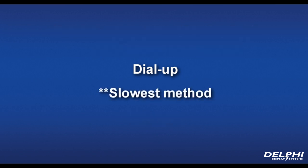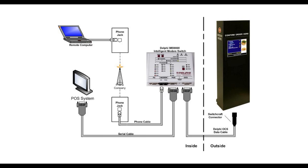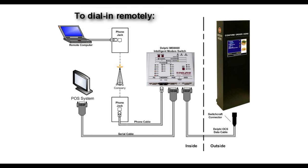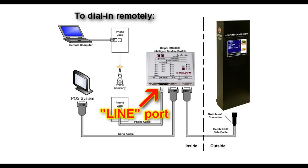Dial-up is the slowest method as all data transfers take place through the phone line. The benefit to using dial-up is it allows a user to send an update to the display without actually having to be at the store. To dial in remotely, you must have a computer with a modem and you must have someone at the store connect the phone cord to the line connection on the bottom of the Delphi IMS.